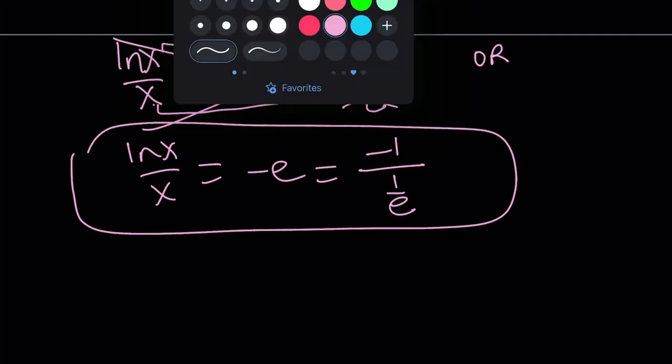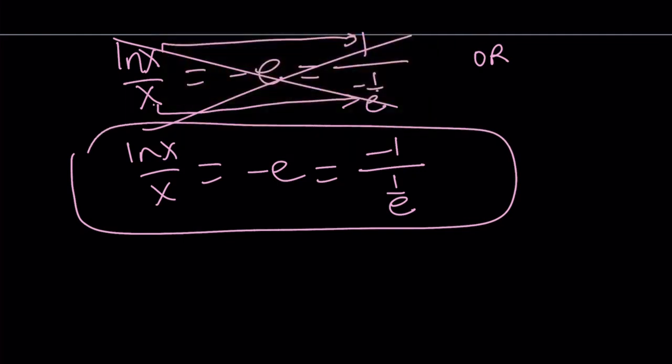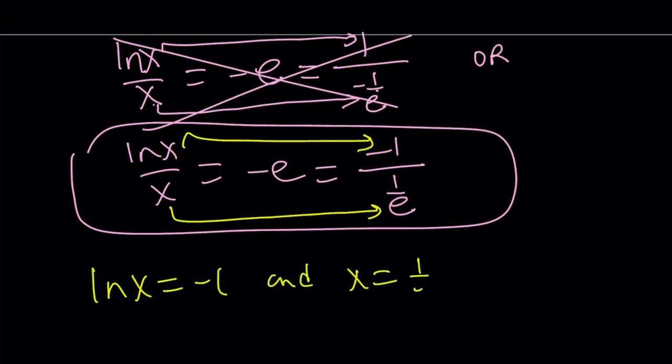And notice that in the second one, if x is 1 over e, ln x is also going to be negative 1. So we have that requirement. ln x equals negative 1, and x equals 1 over e just implies x equals 1 over e.